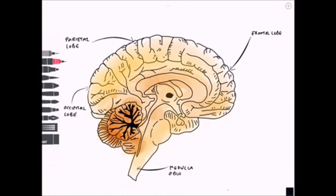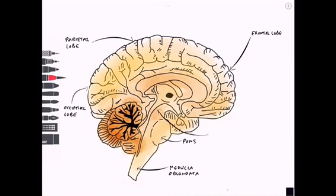Continuous with the spinal cord at the inferior end we have the medulla oblongata. Above that we have a bulge that sticks out on the brainstem called the pons, important for relaying information between the cerebral cortex and the cerebellum.